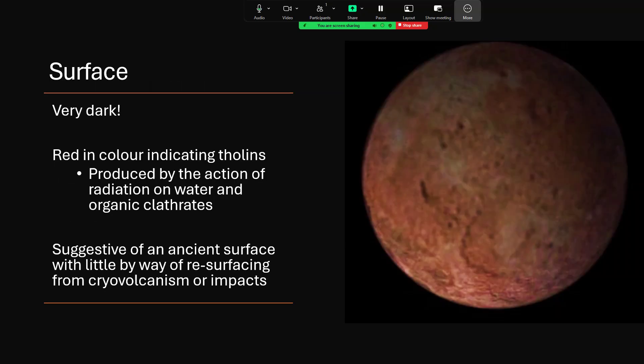Surface-wise, it's very dark and very red, covered in a lot of tholins. I've talked about that many times. The action of radiation on water and what's called organic clathrates, which are where you have cage-like molecules that trap others within the center of them. If you're interested in the chemistry of that, I might talk about that later in another video. But this all suggests that it is an ancient surface. And there's little evidence of any of the resurfacing events, the cryovolcanism or impacts or anything like that at this stage.